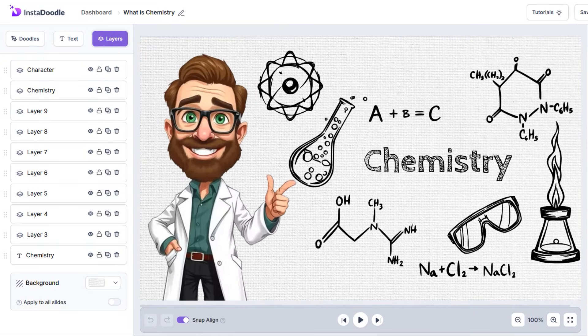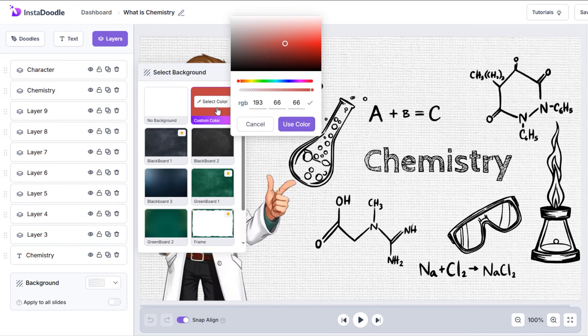We can also set up a custom solid color by selecting the Custom option and adjusting the color slider to whichever color we prefer. Once we've selected the exact color, just use the Use Color button to select it.